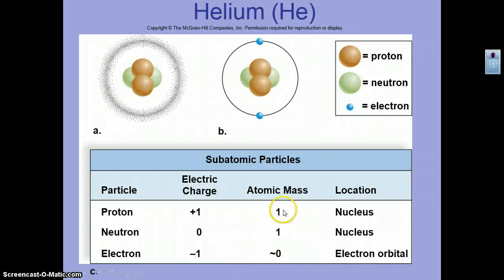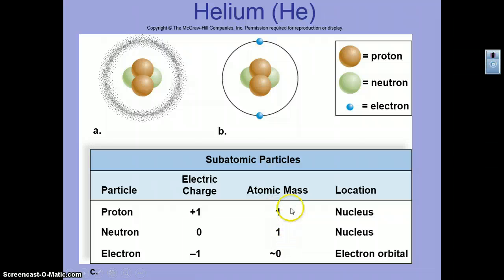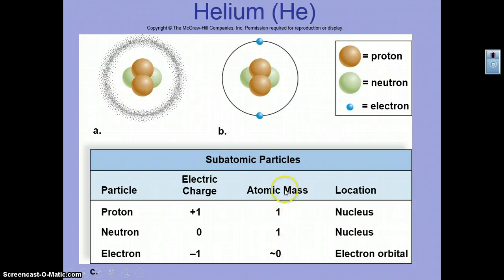Here's a chart showing subatomic particles. Remember that atomic masses are different — protons and neutrons are about the same atomic mass, so we say they're one atomic mass unit. Electrons are so light that it takes almost 2,000 to equal the mass of one proton or neutron, so we consider that negligible.